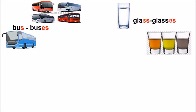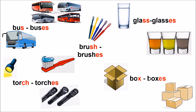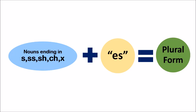Now look at these pictures. Look at the last letter of these nouns. Bus — the last letter is S. Glass — ends with SS. Brush — ends with SH. Torch — ends with CH. Box — ends with X. We can make the plural form by adding ES to nouns ending with S, SS, SH, CH, or X.